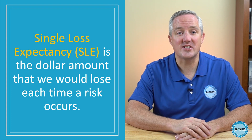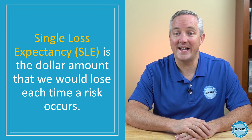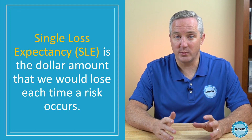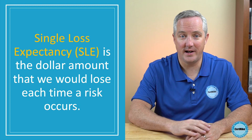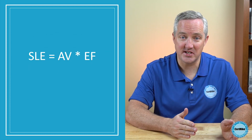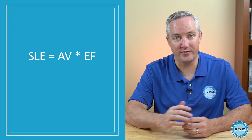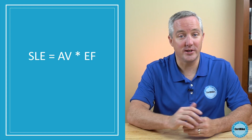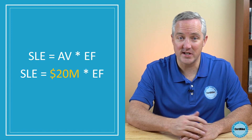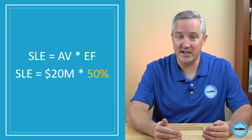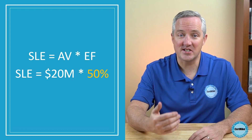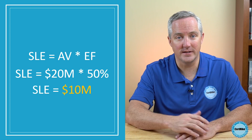The next variable is the single loss expectancy, or SLE. This is the actual damage that we expect to occur if a risk materializes one time. We compute the SLE by multiplying the asset value by the exposure factor. So if we have a data center valued at $20 million and expect that a flood would cause 50% damage to the facility, we compute our SLE by multiplying these two numbers together, and we find that a single flood would cause $10 million in damage.